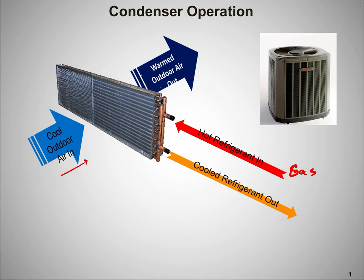We expect cooler outdoor air to come in, and we expect it to become warm as it pulls some of the sensible heat from the refrigerant. That's the basic expectation of the system. One way I can tell if a unit is not pulling out a lot of heat is by the difference between the cooler outside air coming in and the warmer outside air going out. When those two temperatures are very close together, we're not really pulling much heat out — something is not right.